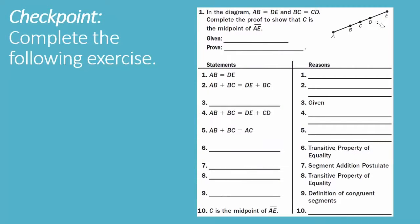Checkpoint problem number one is yours. In the diagram, AB equals DE and BC equals CD. Complete the proof to show that CE is the midpoint of line segment AE. Look at example three to help you through this checkpoint — give it your best try to see how well you can write your proof. All right, that's it from me. I'll see you all soon.